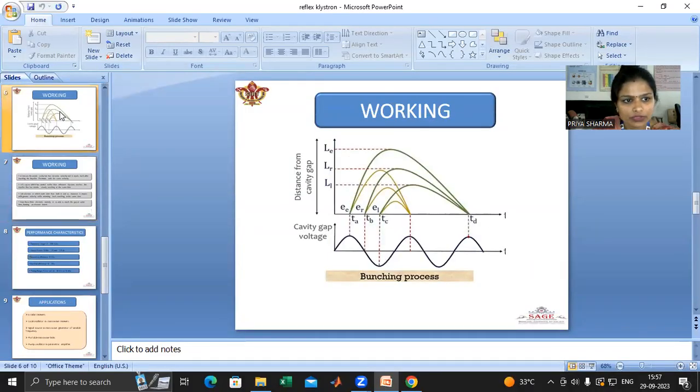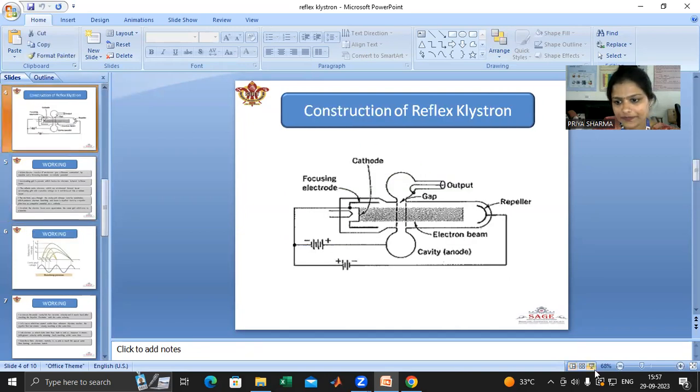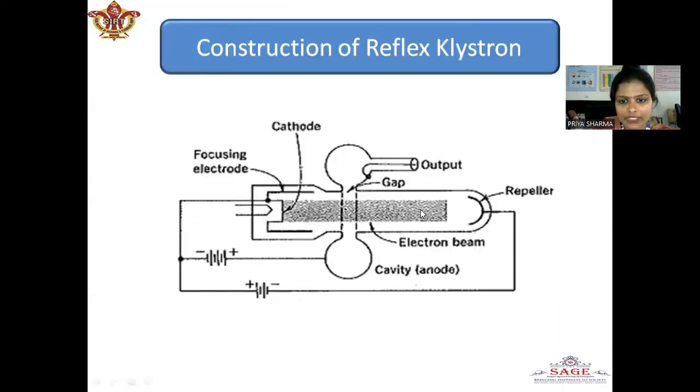When it is repelled back, it again comes to this cavity. Reference electron is repelled back by the repeller. The reference electron experiences a maximum positive voltage across the gap and this electron is accelerated. It moves with greater velocity and penetrates deep into the repeller space.